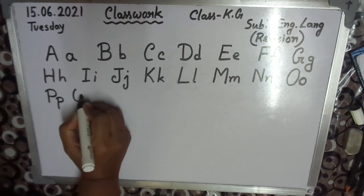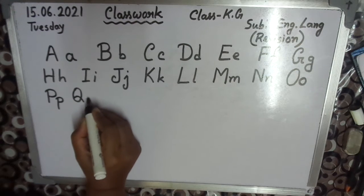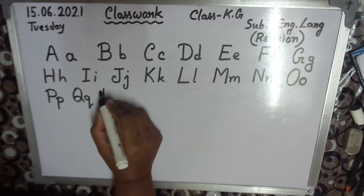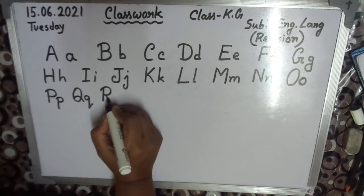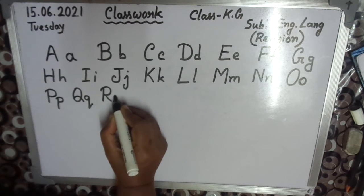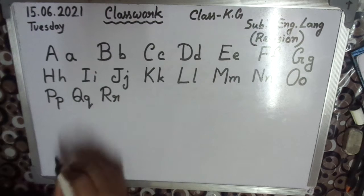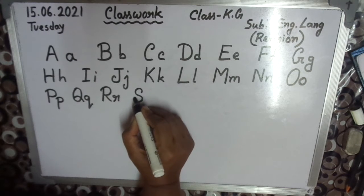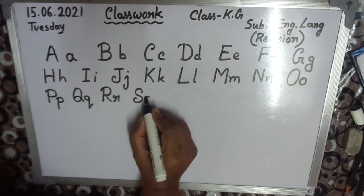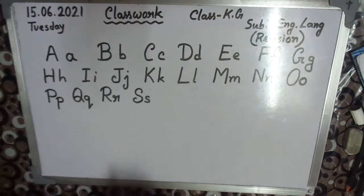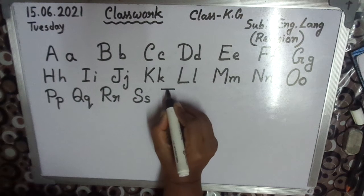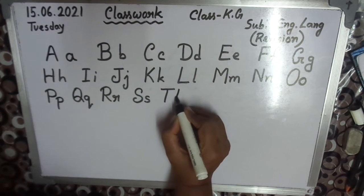Q — capital Q, small q. R — capital R, small r. S — capital S, small s. T — capital T, small t.